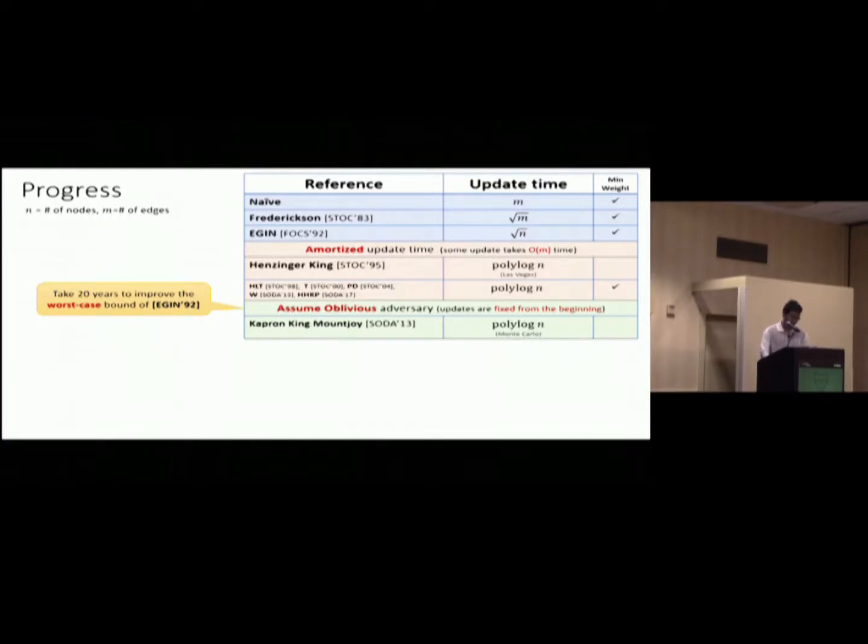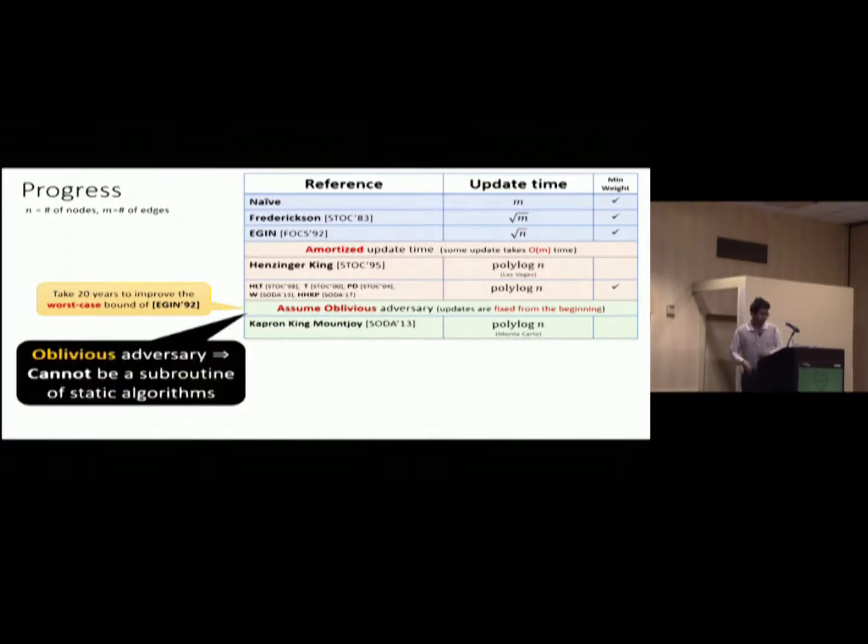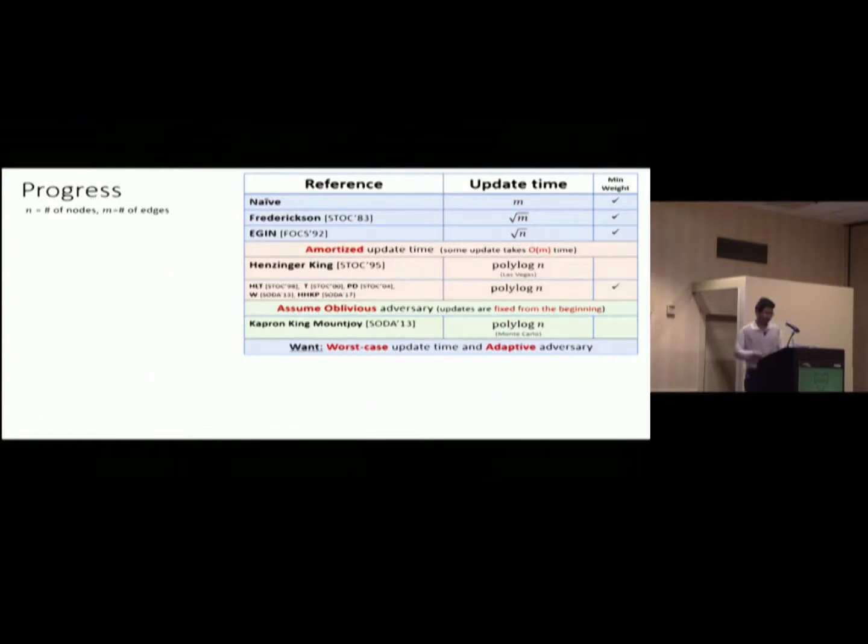That is, you cannot adapt your next update based on the answer of the data structure given to you. But this is one breakthrough, because it takes 20 years to improve this worst case bound by Eppstein. But because of this catch, oblivious adversary that they assume, it means that you cannot use this as a subroutine in static algorithm. So, the goal now shifts to this, that is, we want both worst case update time. And we don't want to assume oblivious adversary, so we want adaptive adversary.